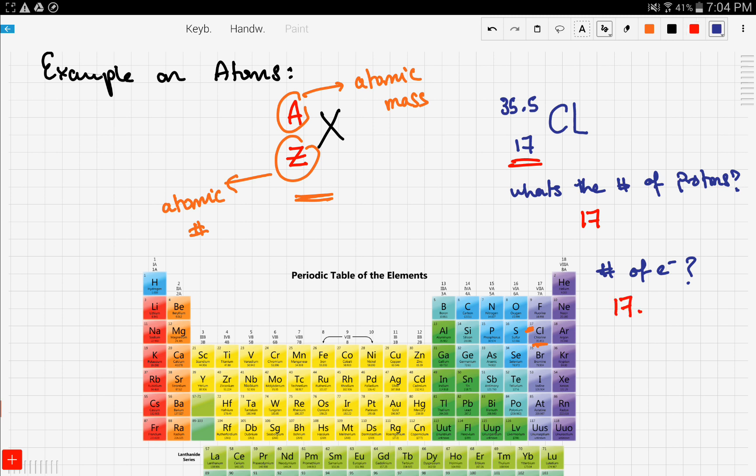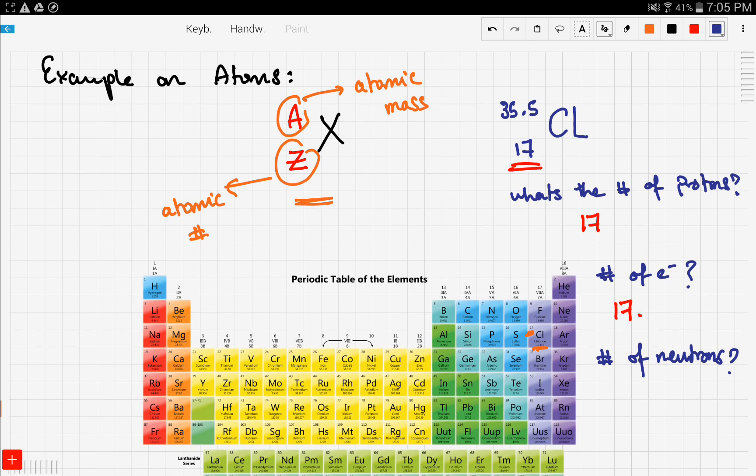Now let me ask you another question: what's the number of neutrons? Now this is kind of tricky. We said that the atomic mass, which is this one, is basically the sum of protons plus neutrons. So this is not neutrons alone, this is neutrons plus protons. And the atomic number is the number of protons. So can we subtract to get the number of neutrons? Yes. So what do we do? We subtract the atomic number, which is the Z, from the A.